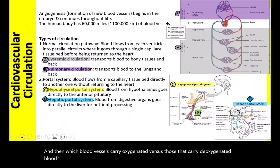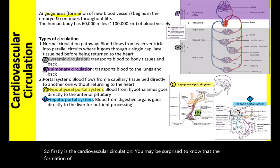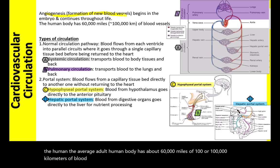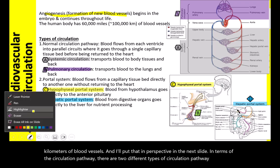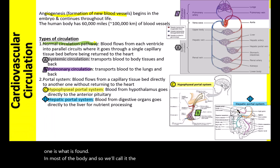Firstly, cardiovascular circulation. The formation of blood vessels — angiogenesis — starts in utero and continues throughout life. The average adult human body has about 60,000 miles or 100,000 kilometers of blood vessels. In terms of circulation pathways, there are two different types: the normal circulation pathway found in most of the body, and the portal system.